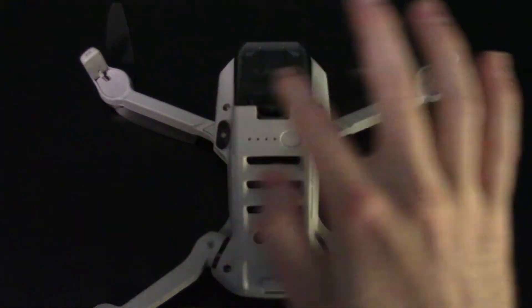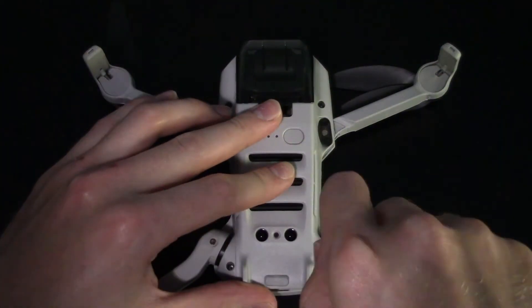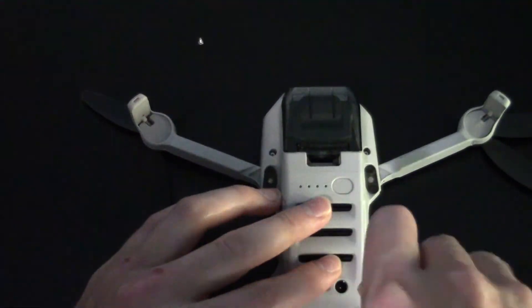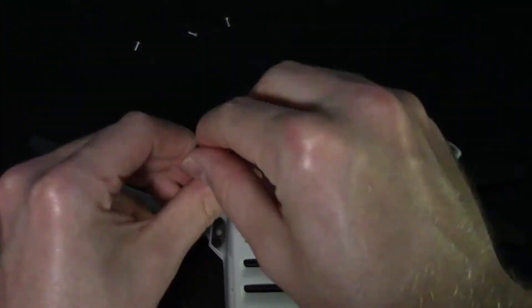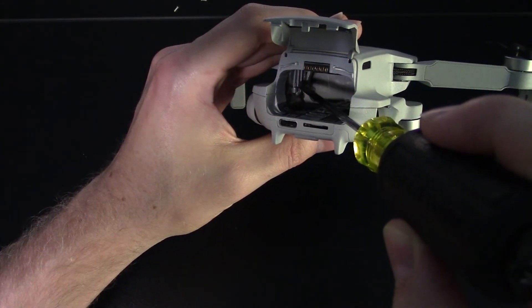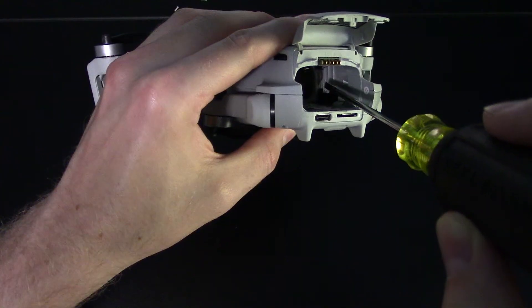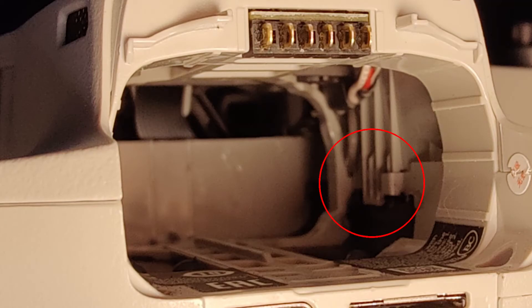First thing you want to do is take out these four screws on the bottom here. You'll want to use a small Phillips screwdriver to take these out.